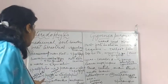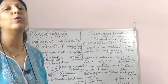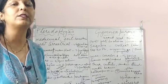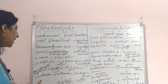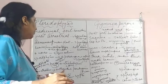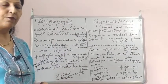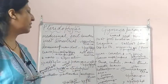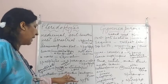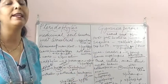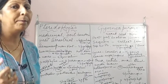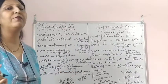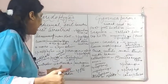These spores germinate and give rise to a photosynthetic gametophyte, which is green in color and is also known as the prothallus. This prothallus bears the male reproductive organ - antheridia, and the female reproductive organ - archegonia. Antheridia bear antherozoids, which are the male gametes, and archegonia bear the egg.